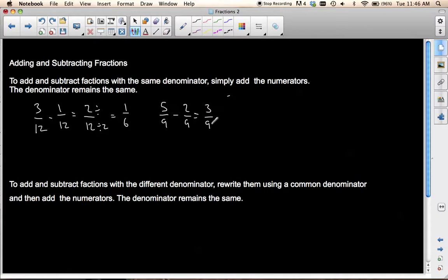Both of these have a common divisor, which is 3. Divide both by 3, and I end up with 1 over 3. That's all you need to do if they have the same denominator.